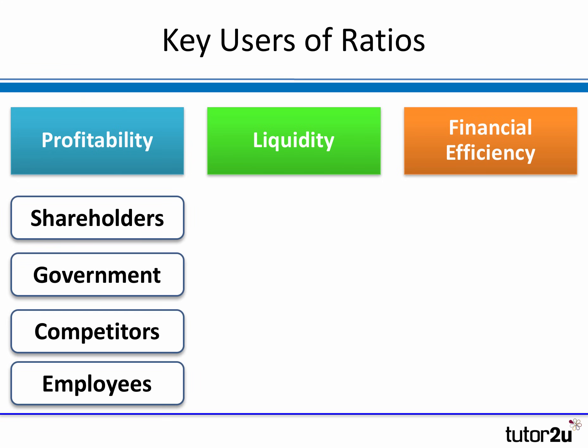Lots of user groups are interested in the profitability of a business. Shareholders in particular want to understand what kind of returns are being earned. But if you're a competitor, you're certainly interested in the profitability ratios of your key competitors. As an employee, you're interested in what kind of returns and profits are being earned by your business. Governments will be interested in profits, particularly when it comes to understanding how much tax should be paid on those profits by businesses.